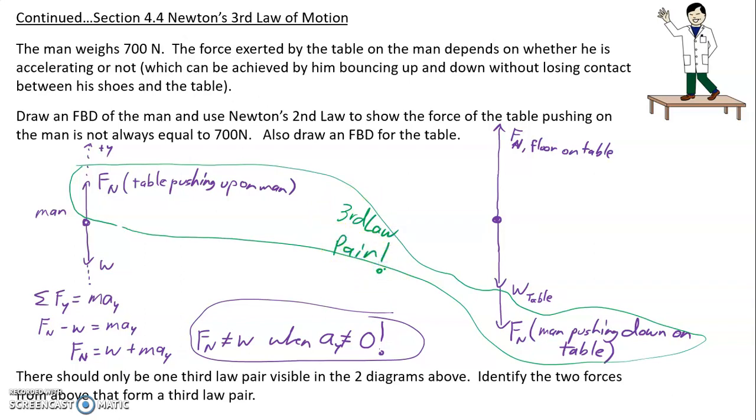That's the only third law pair that's visible here. But every force that you see has a third law pair. If we were to draw a free body diagram for the floor, it would be kind of a weird thing to do. But if we do that, then we will see the third law pair to this force, which is the table pushing down on the floor. Or if we were to draw a free body diagram for the earth, then it would have the third law pair to this, which would be the man pulling up on the earth. Because this force is the earth pulling down on the man. But the only third law pair where we can see both of the forces in the pair is this one right here.